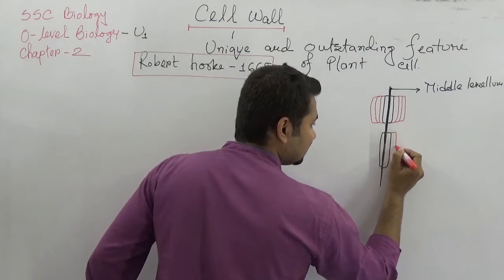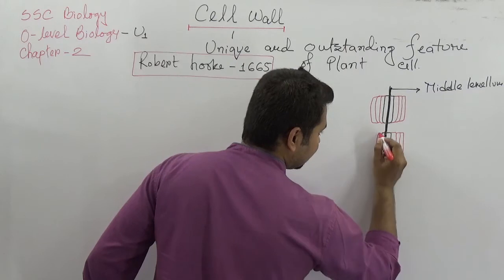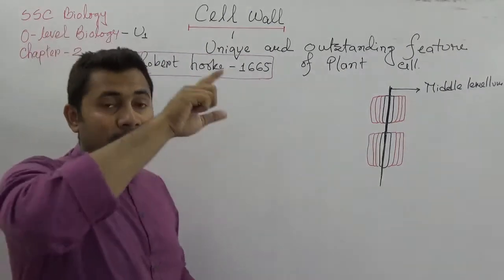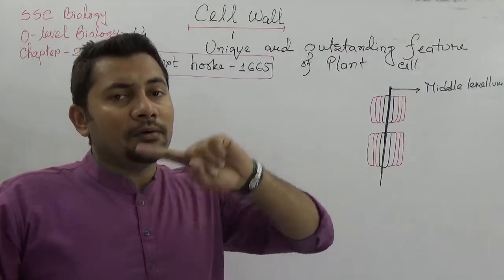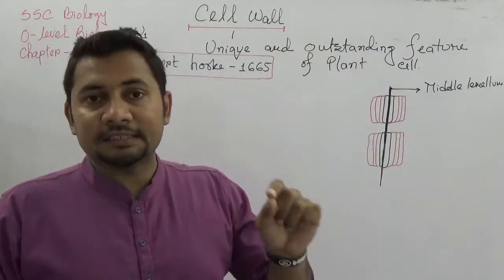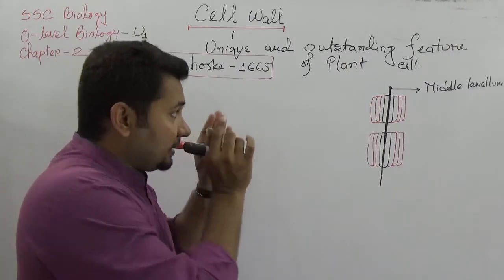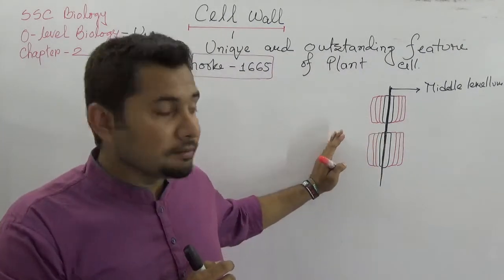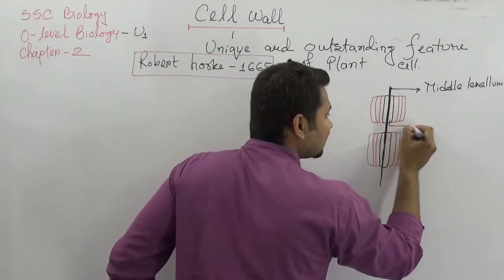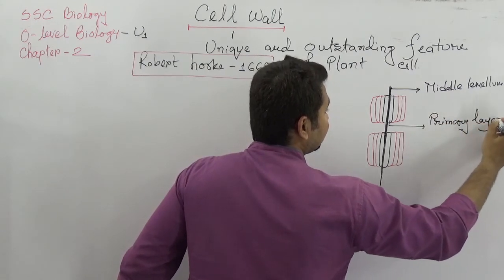There will again be three sequential secondary layers adjacent to the cell wall. When we draw a plant cell, we know the outermost layer is called the cell wall, and on the inner side there is the plasma membrane. Inside the cell wall we find the middle lamella, and adjacent to it is the primary layer.